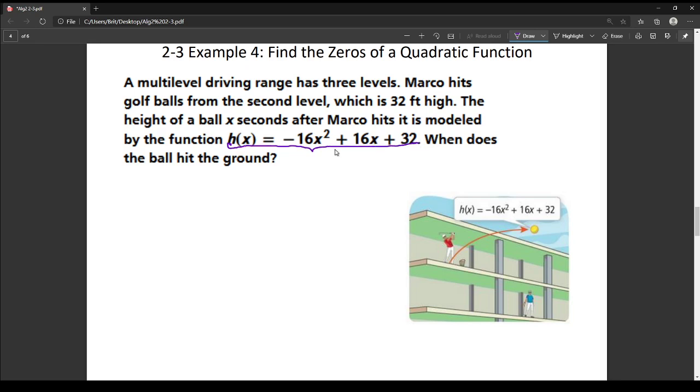So that 32 feet is right there on your c-value, because that's your y-intercept. And so they're wondering when the golf ball's going to hit the ground, so how long that takes.